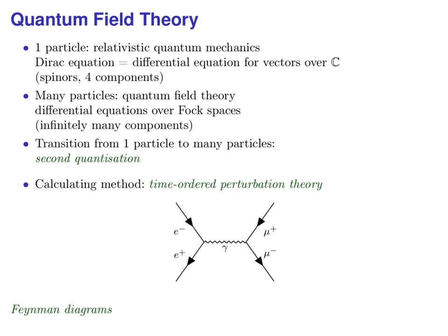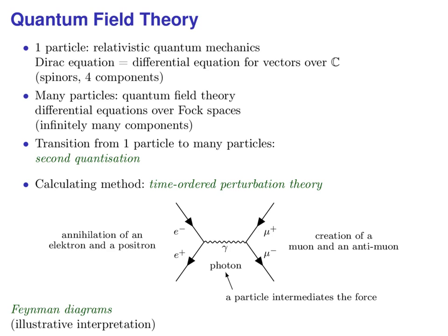A Feynman diagram is a shorthand for a mathematical formula, an integral. However, there is also an illustrative interpretation for it. For instance, we can interpret this particular Feynman diagram as a collision between an electron and a positron. The positron is the antiparticle of the electron, thus it moves in the opposite direction of this arrow. In the collision, the electron and the positron annihilate each other, generating a quantum of gamma rays, a photon. In this example, electromagnetic interaction is intermediated by a particle, a photon, a so-called intermediate particle. From the photon, a muon and an anti-muon emerge. Again the anti-particle moves in the opposite direction of this arrow.